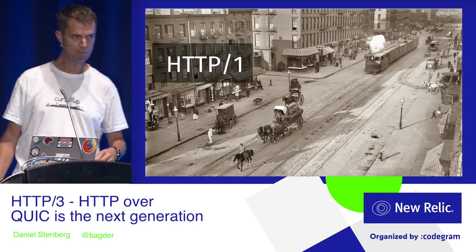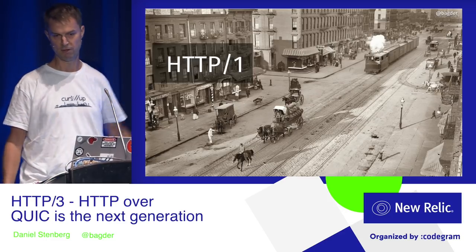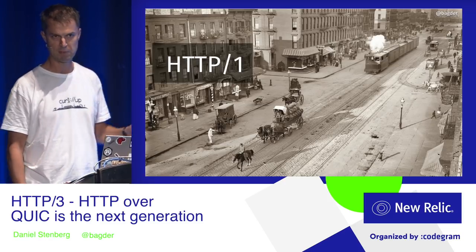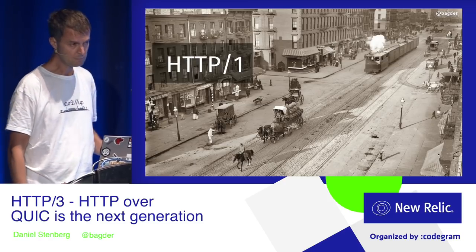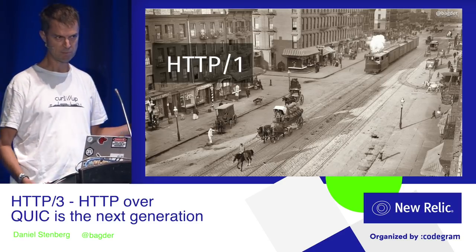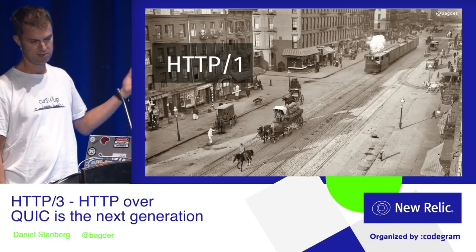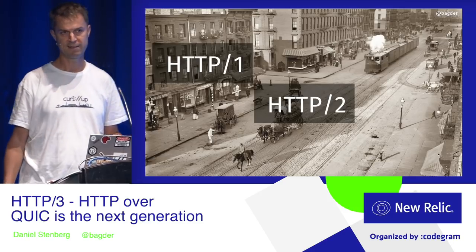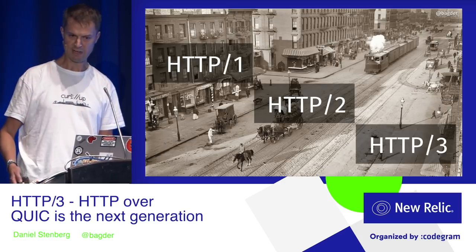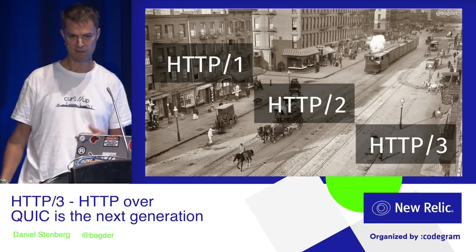HTTP1 wasn't the first HTTP version, but we got it in the late 90s. HTTP1, the first version actually came in 1996. There was HTTP before that as well — Tim Berners-Lee called it HTTP, this thing that he created in the 80s. In 2015, we shipped the spec for HTTP2, and 2015 to 2019 is not that long, but we're already now talking about how to fix problems and introduce HTTP3.